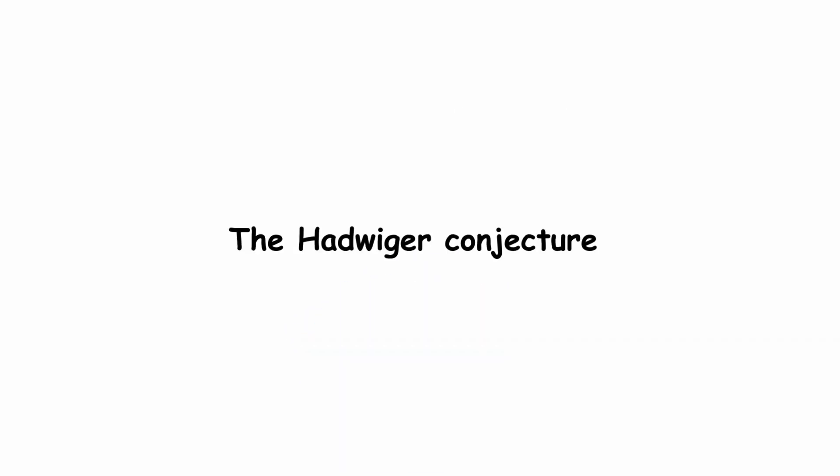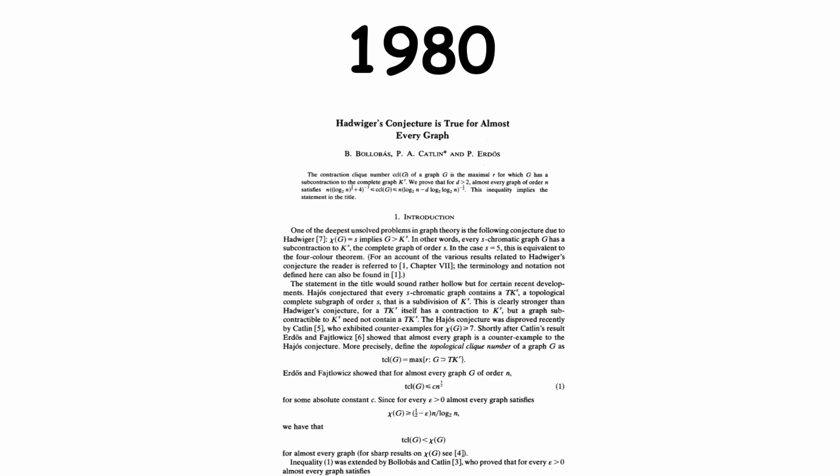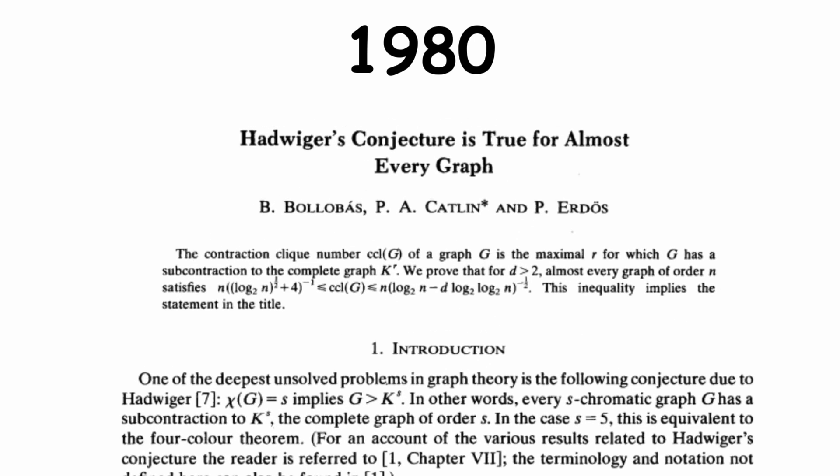One major paper on the topic was published in 1980, entitled, Hadwiger's Conjecture is True for Almost Every Graph, which proves exactly what its title says.